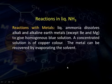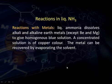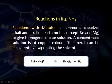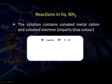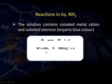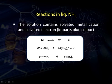Liquid ammonia dissolves alkali and alkaline earth metals (except beryllium and magnesium) to give a homogeneous blue solution; a concentrated solution gives a copper color. The metal can be recovered by evaporating the solvent. The metal ionizes to give metal ion plus electron; the metal ion forms a solvated cation and the electron forms a solvated electron — the blue color is due to the solvated electron. On evaporation, the electron returns to the parent ion and the metal is recovered.